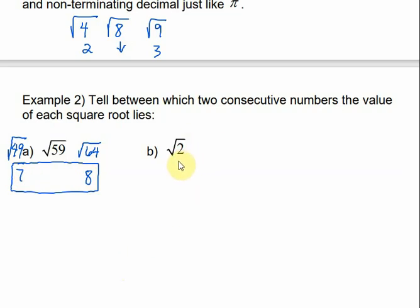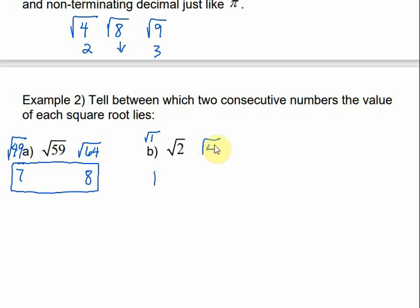For the square root of 2, let's think of a perfect square close to 2 that's smaller than 2 — that would be 1, and the square root of 1 is 1. The next perfect square would be 4, and the square root of 4 is 2. So we know that the square root of 2 is between 1 and 2.